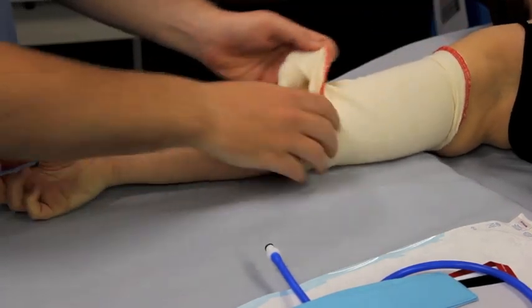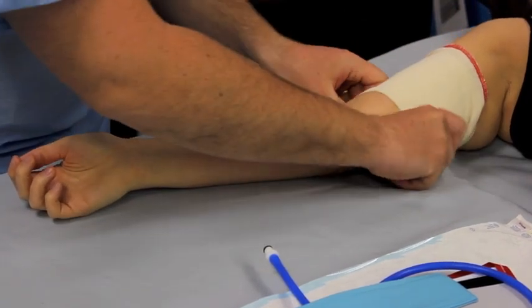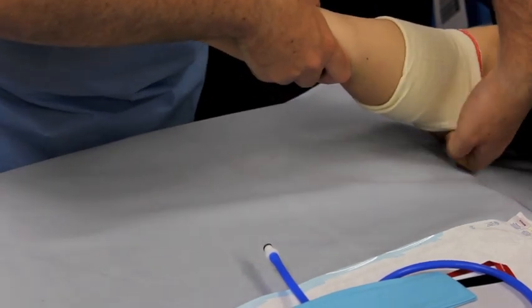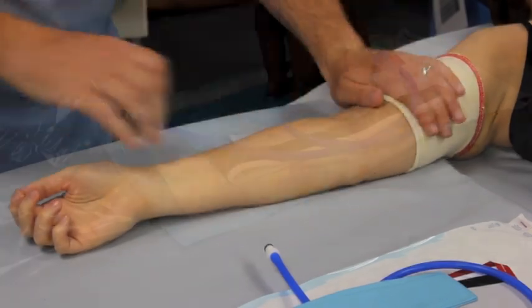Too thick a layer should be avoided as it will increase the required pressure for safe limb occlusion. For this reason, it is recommended that two layers of padding should be used. The VBM padding is patient specific which facilitates easy placement without wrinkling.